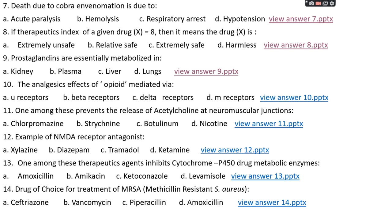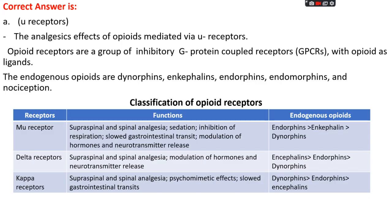This enzyme selectively oxidizes the hydroxyl group at carbon 15 into a 15-keto moiety, making it in excretable form. Question number ten: the analgesic effect of opioids is mediated via — option A: mu receptor, option B: beta receptor, option C: delta receptor, or option D: M receptor. The right answer is option A, mu receptor. The analgesic effect of opioids is mediated via mu receptors.